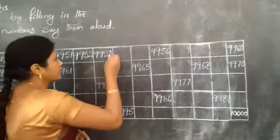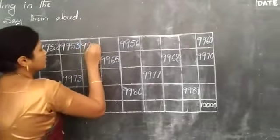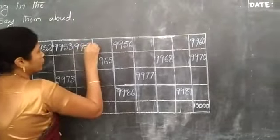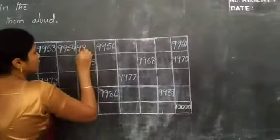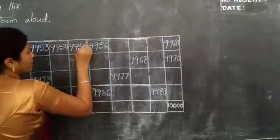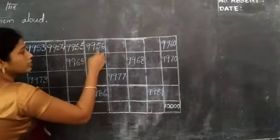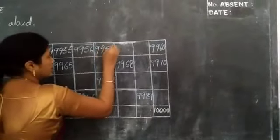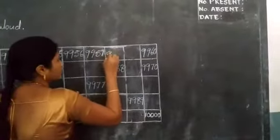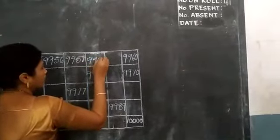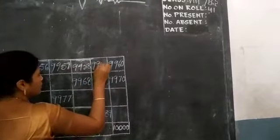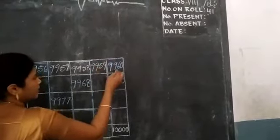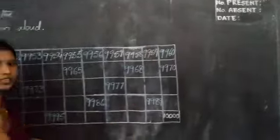9954. Next, 9955, 9956, 9957, 9958, 9959, 9960.